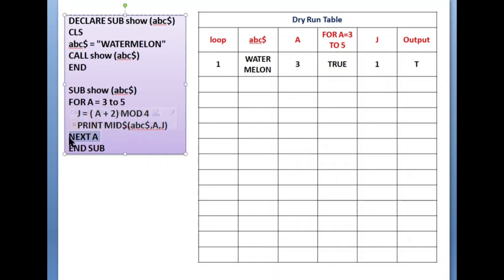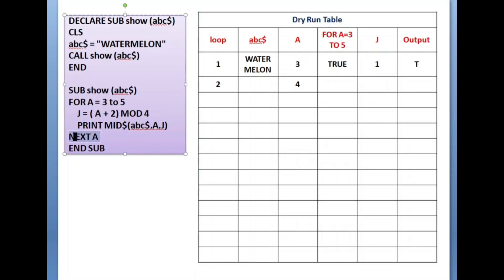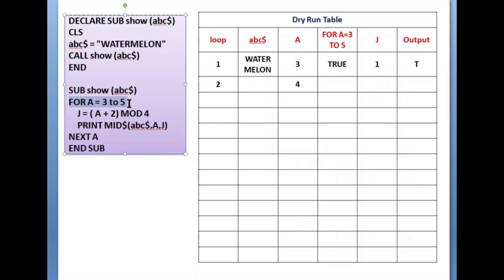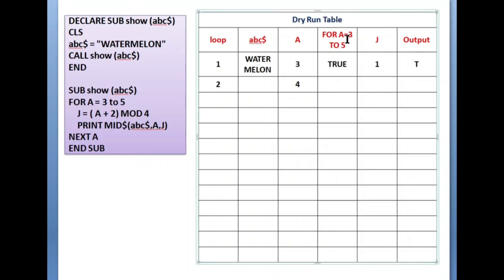NEXT a — the value of a is incremented by one, from three to four. This is the second loop execution. After incrementing, it goes back to the FOR loop to check the condition. The loop runs from three to five, and now a is four, so the condition is still true.